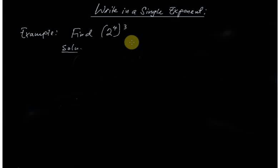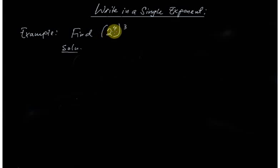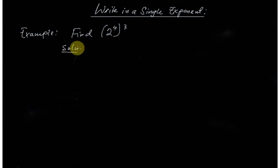Hello and welcome to this very short lesson about writing exponents as a single exponent. Suppose we are given two to the power four, to the power three — how can we write this as a single exponent?